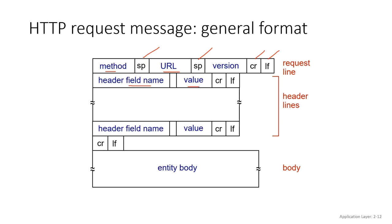You have your header lines followed by the entity body. The entity body is typically used with a POST request — for example, when posting your username and password to a website. You're sending those values to return a web page that is personalized to you. That's a POST request.